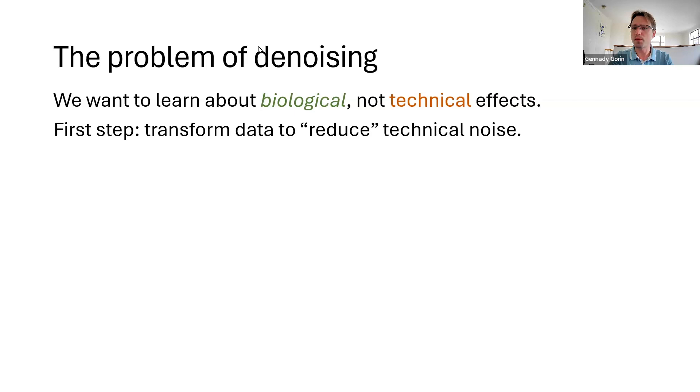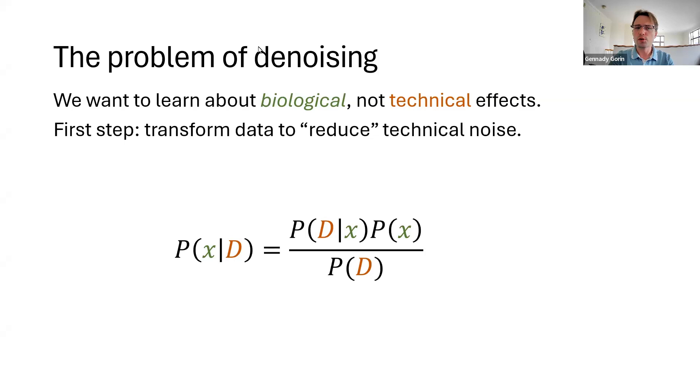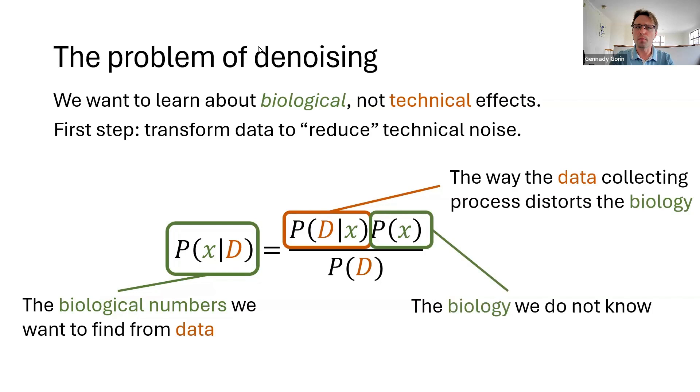And to understand the implications of this, we can use a different mathematical object-based theorem. In the last slide, we saw that the true number of biological molecules controls the number we observe. And we can invert this relationship. So, the number we observe can be cast to the true number using technical noise, as well as this object, P(X), which represents the amount of RNA in the cell.